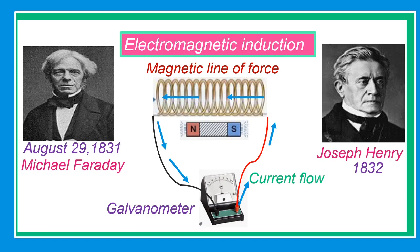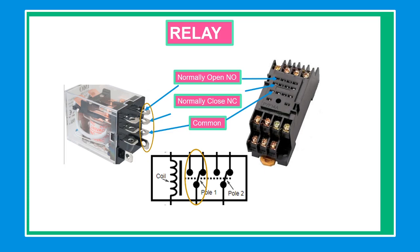Michael Faraday was an English physicist who gave us one of the most basic laws of electromagnetism, called Faraday's Law of Electromagnetic Induction, while Joseph Henry was an American scientist. A relay can be used to control several circuits with just one signal. A relay contact having one or more poles can energize other circuits or stop another circuit. Protective relays can prevent equipment damage by detecting electrical faults like overcurrent, undercurrent, overloads, and reverse current.